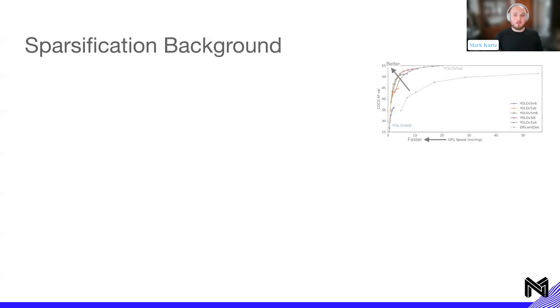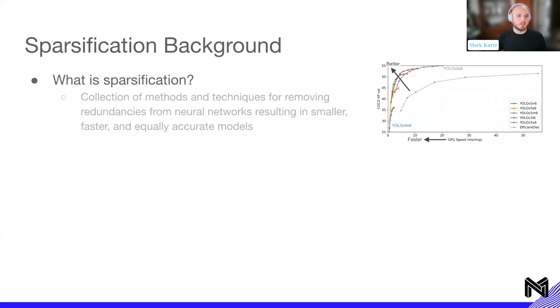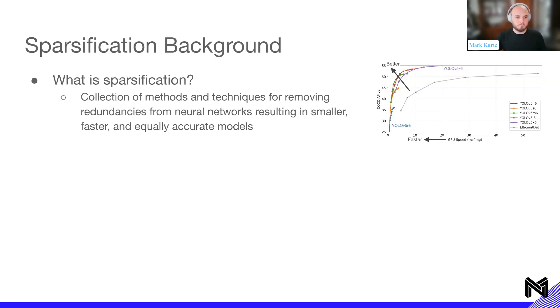Running through the background: what is sparsification? It's a collection of methods and techniques for removing redundancies from neural networks that results in smaller, faster, and equally accurate models.